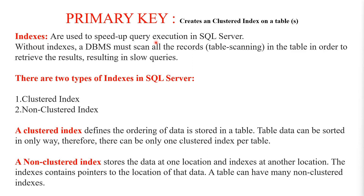Even if you don't want to specify a primary key, you can still create a clustered index using the CREATE INDEX syntax. There are two main types of indexes in SQL Server: the clustered index and the non-clustered index. A clustered index speeds up queries by reordering the records within the table. Because a table can only be sorted one way, there can only be one clustered index per table, but you can create more than one non-clustered index.